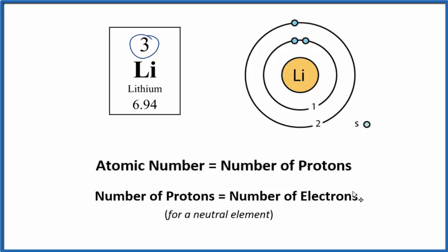The number of protons also equals the number of electrons for a neutral element. And all the elements on the periodic table, they're neutral.